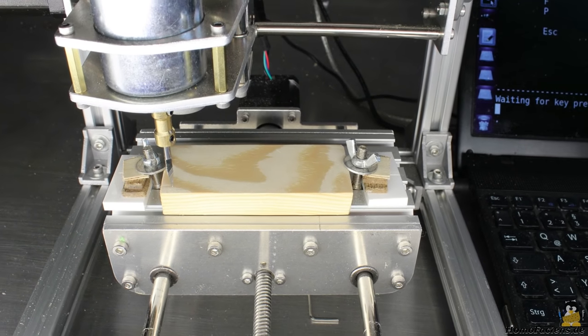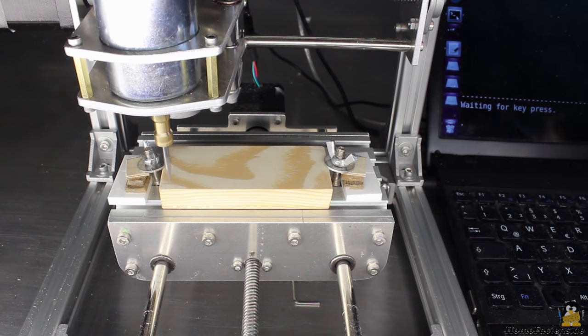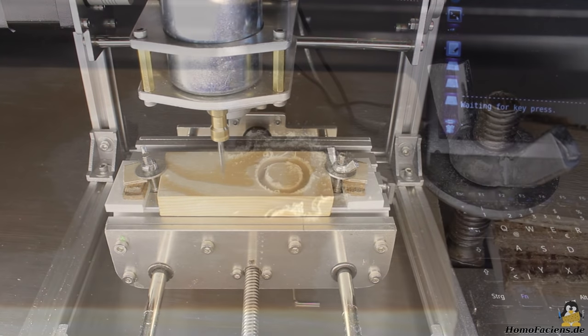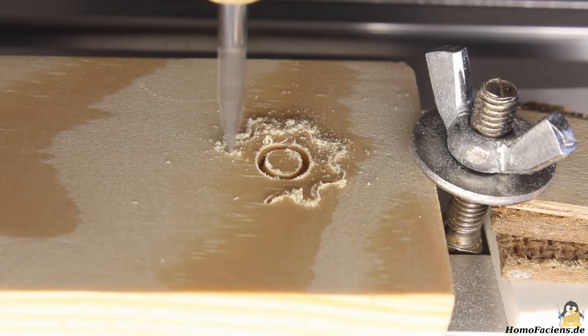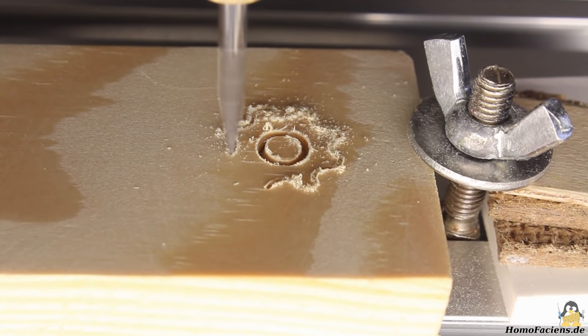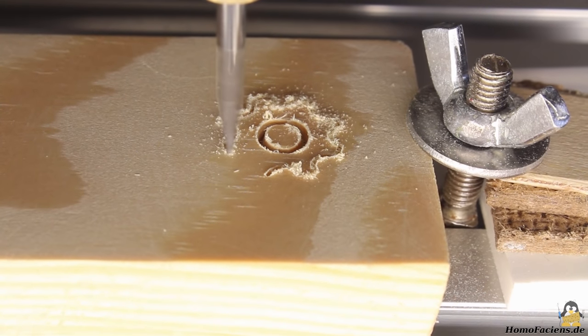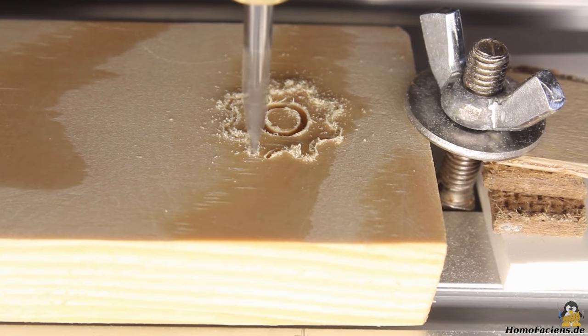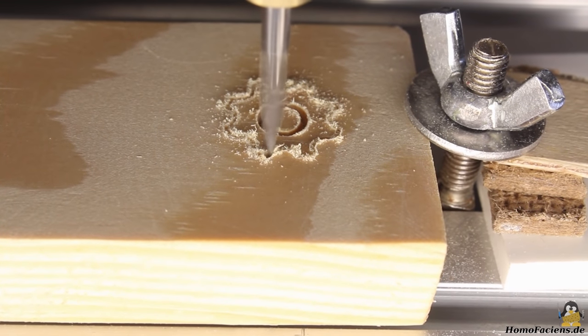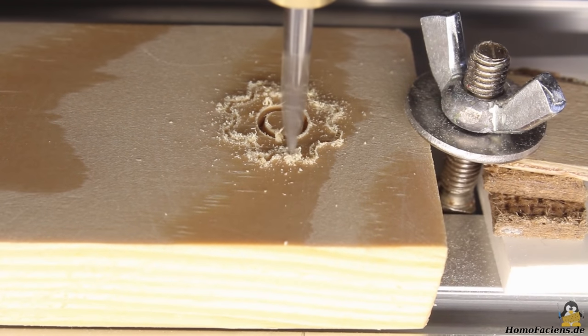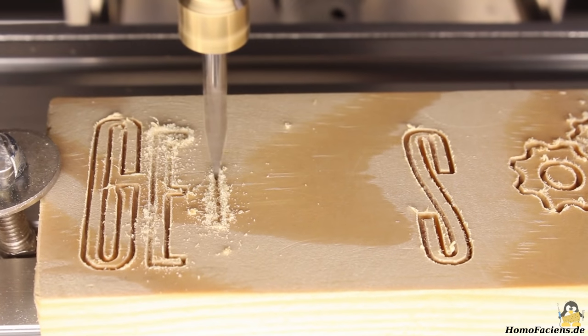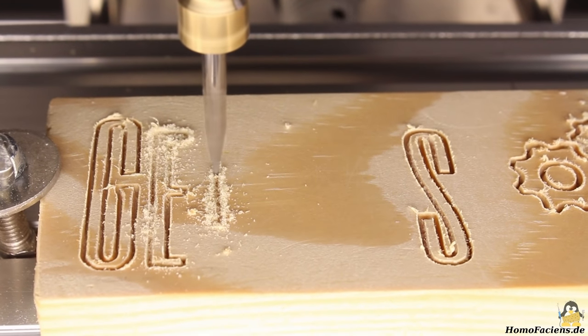You can also process wood with this machine, but not with maximum machine speed, thus you must reduce the feed rate. Here I have set this parameter to 80mm per minute. The depth per path is set to 0.3mm. The total depth of the engraving is 1.2mm.